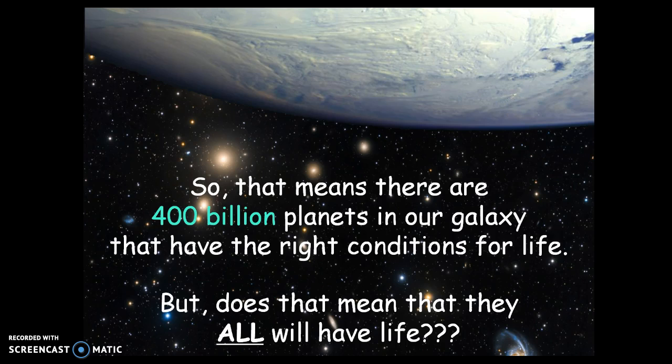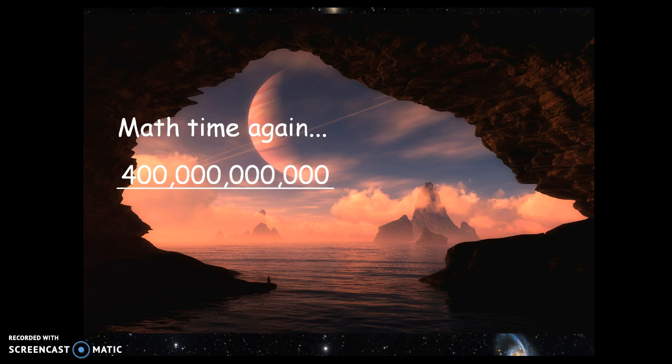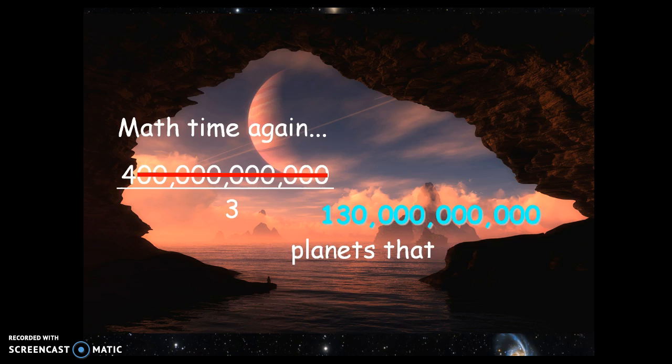But that doesn't mean they're all going to have life. You might still end up with a Mars or Venus situation, where the conditions were right maybe at the beginning but not now. So we need to whittle the number down a little bit more. Drake decided that out of all the planets that actually had the right conditions, only one-third of them would actually end up with life — so the other two-thirds he threw out. If we divide 400 billion by three, 4 divided by 3 is about 1.3 repeating. Drop all the zeros back in and that gives us about 130 billion planets that actually do have life on them. And again, we're trying to lowball this — a low estimate.